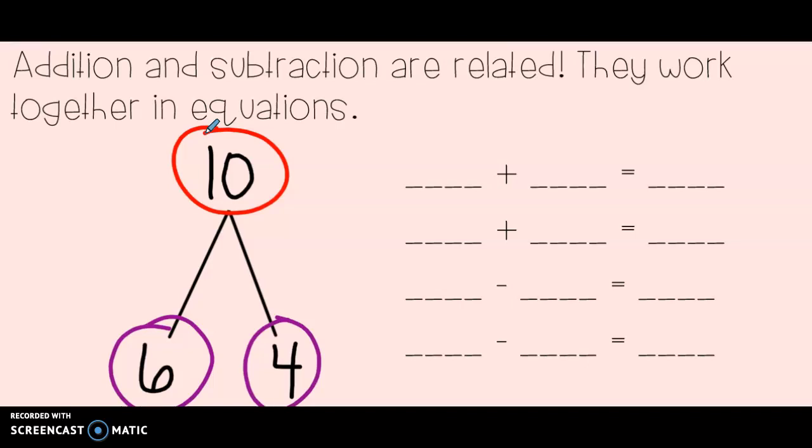In my class, we use a special trick. We say that the number at the top of the mountain is the king of the mountain because it's the biggest number. The king always lives at the top of the math mountain because he is always the biggest number. So, if I am solving a math problem, one of my bottom addends cannot be bigger than the king.